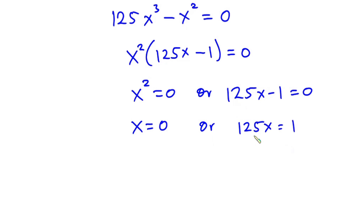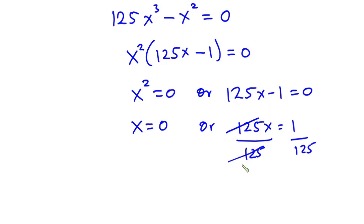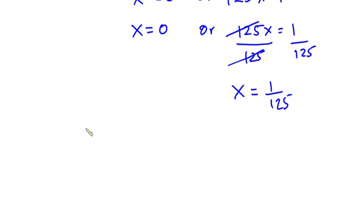From the second factor, we have 125x equals 1. Since we are looking for x, let's divide each side by 125, so that the 125 cancels, giving us x is equal to 1 over 125.